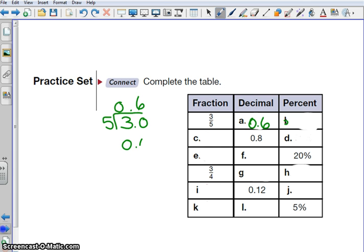Zero point six is your answer. Zero point six can also be written as six over ten, because it's six tenths, timesing it by 100% to figure out your percent. Remember, you can cancel.